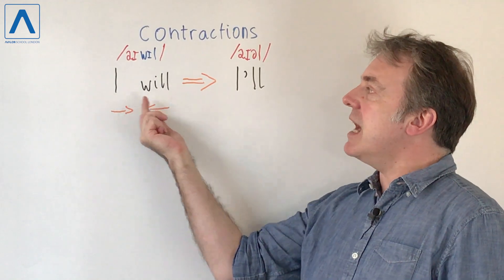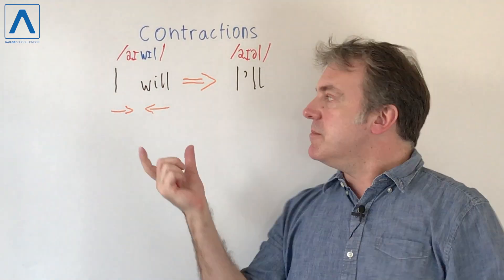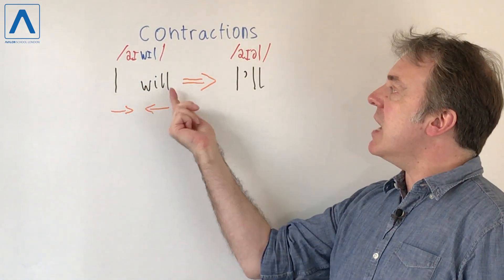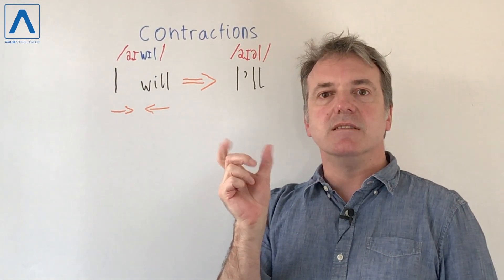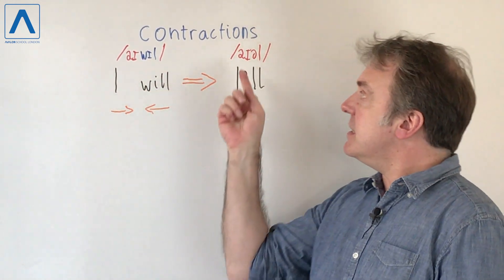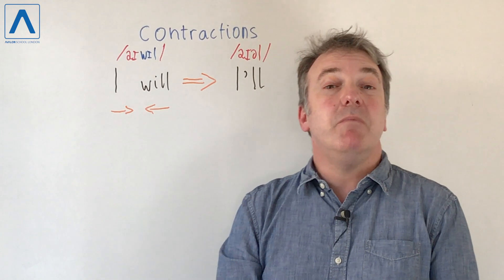I will and we push them together so that's a contraction. You push them together so I will becomes I'll. And here we can see we have two syllables and here it's only one.